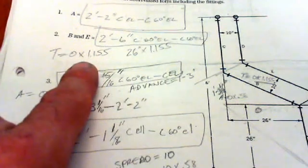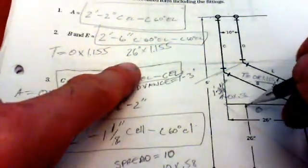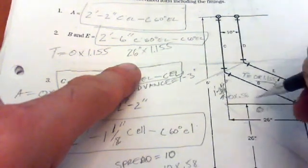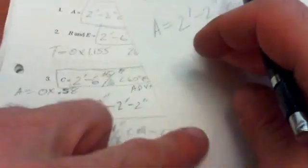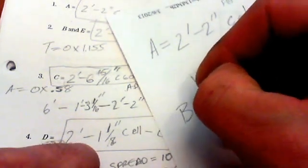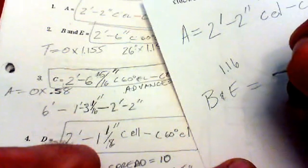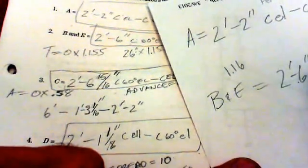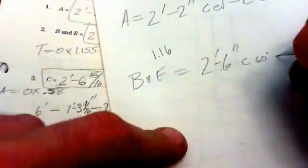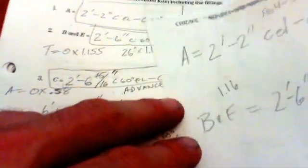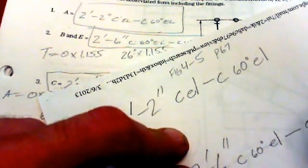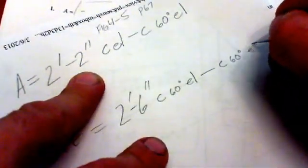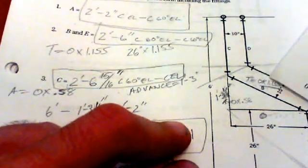When you multiply that out, your offset times that constant will give you your travel center to center, which is 2'6". So, B and E equals 2'6", center 60-degree elbow to center of 60-degree elbow. That'll be for both of them.